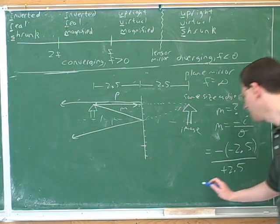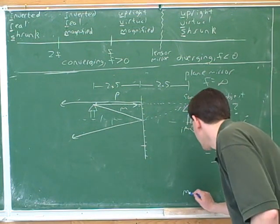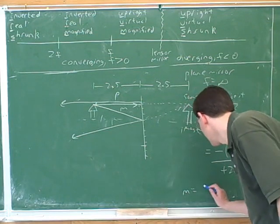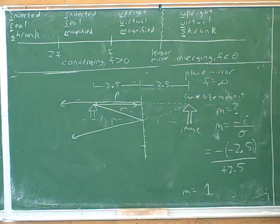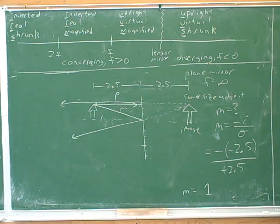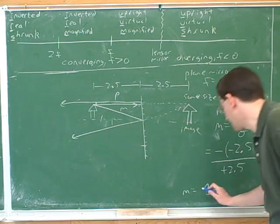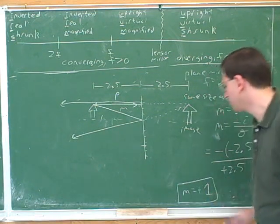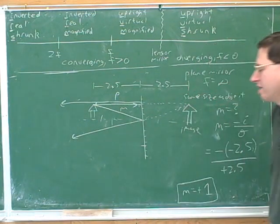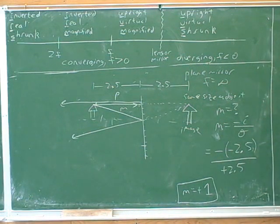The two negatives cancel, and you end up with M equals 1. That's good, but it would be better to report the sign as well — we always want to focus on the sign. Mathematically, this came out positive. Remember, the variable M has two different pieces of information packed into it.